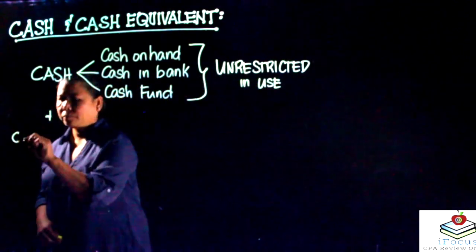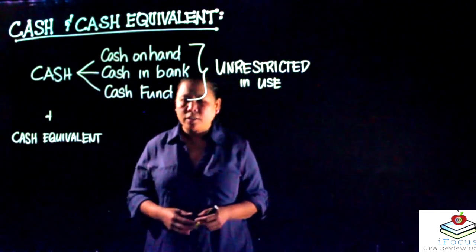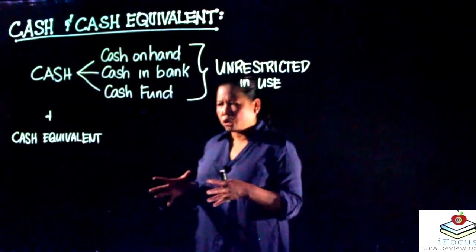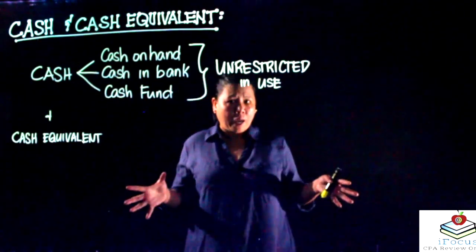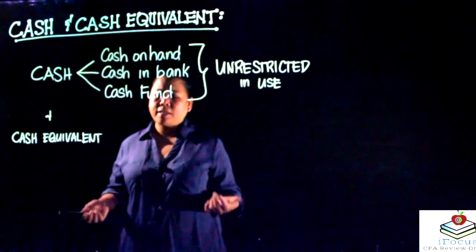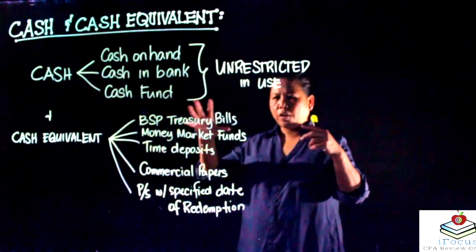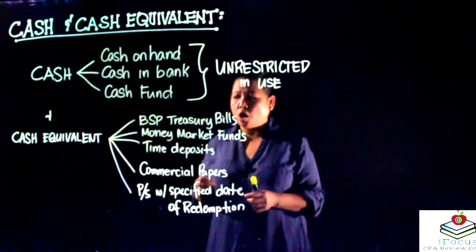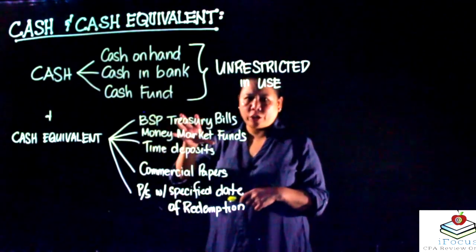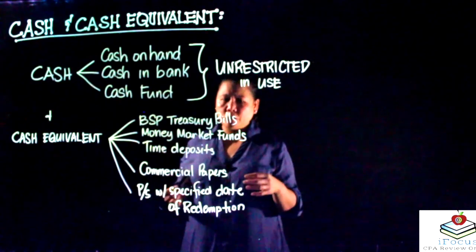Cash equivalents are securities that are easily convertible into cash — instruments or papers that you can convert into cash. Examples of cash equivalents include: Bangko Sentral ng Pilipinas treasury bills, money market funds, time deposits, commercial papers, and preference shares with a specified date of redemption.